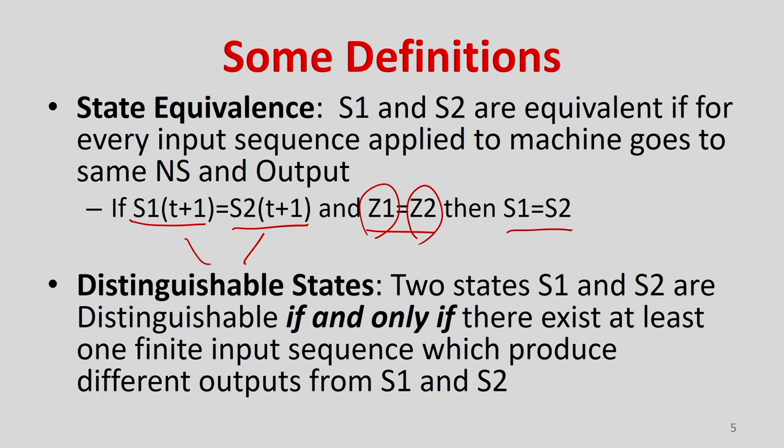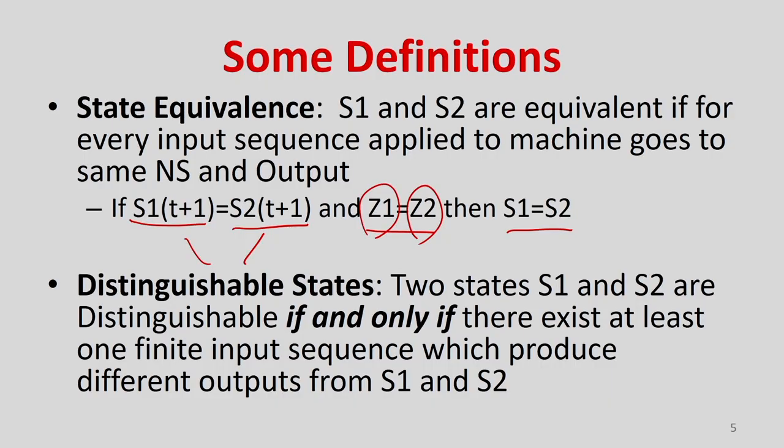What is a distinguishable state? Two states S1 and S2 are distinguishable if and only if there exists at least one finite input sequence which produces different outputs from S1 and S2. This is exactly opposite of state equivalence. Based on these two definitions — state equivalence and distinguishable states — we will try to minimize the FSM.